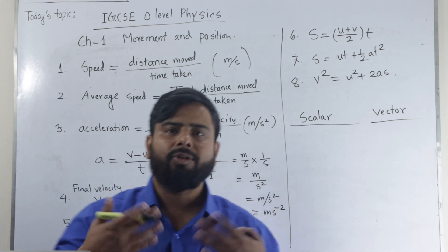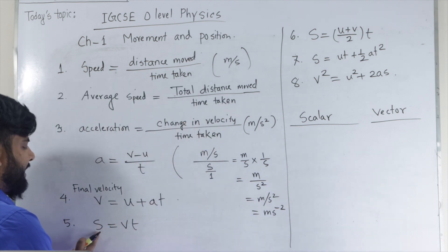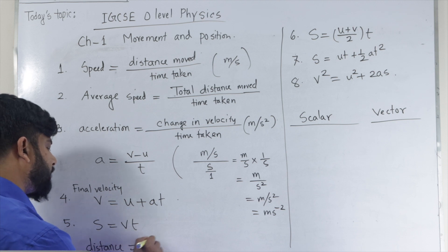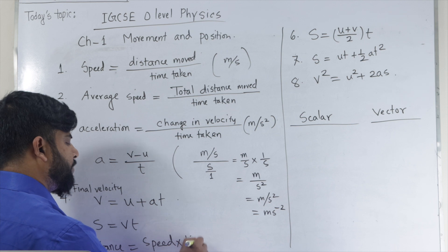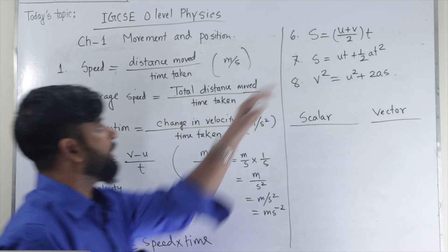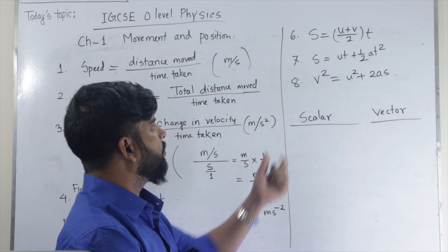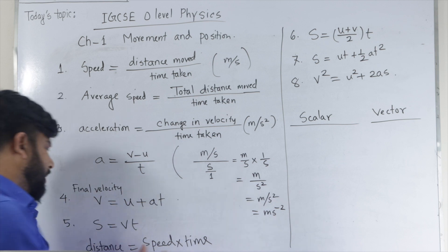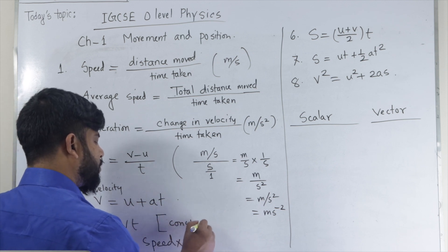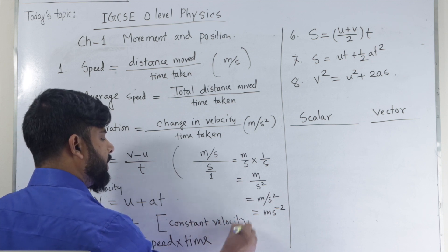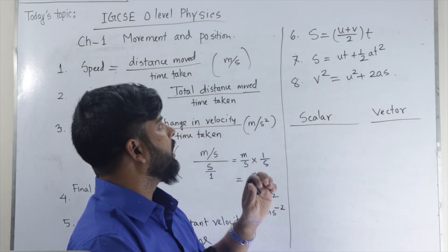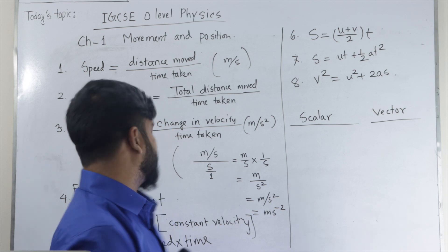If the object moves with constant velocity, then we can write distance S equals speed multiplied by time. We use this formula only when the object moves with constant velocity. If the object changes its velocity, then we use average velocity instead of constant velocity. So S equals V times T for constant velocity, but if velocity changes, we use average velocity instead.